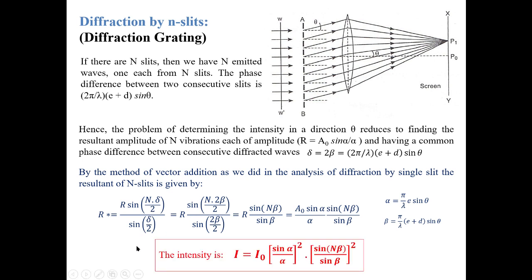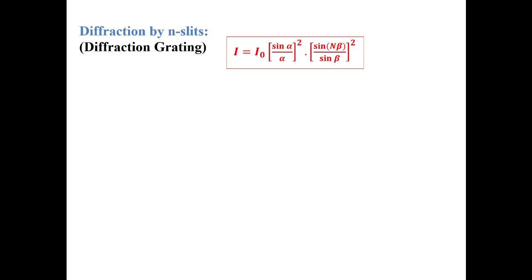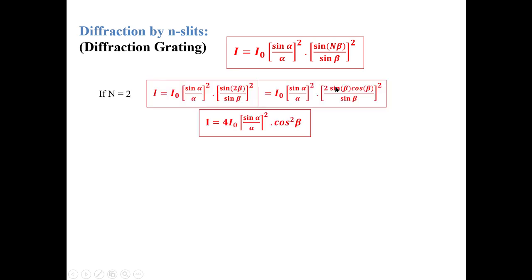The intensity is the square of amplitude, so the intensity due to a grating is I = I₀ sin²α / α² × sin²(Nβ) / sin²β. We can check the validity of this expression for double slit by putting N = 2, which reduces the expression to I = 4I₀ sin²α / α² × cos²β, which is indeed the expression for the double slit pattern.